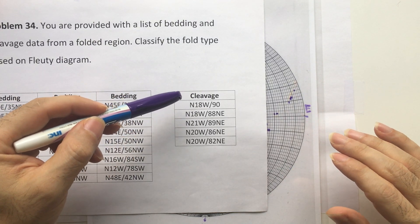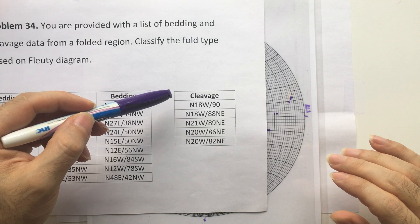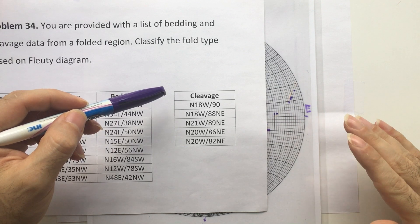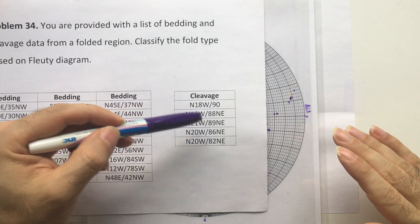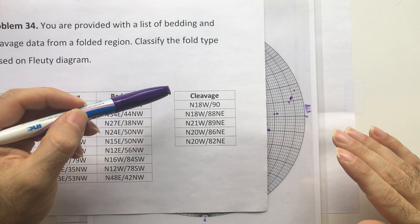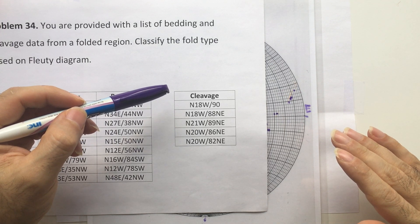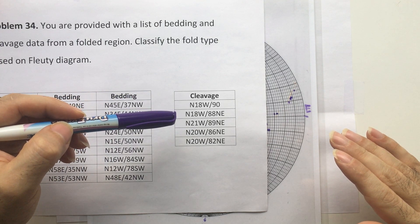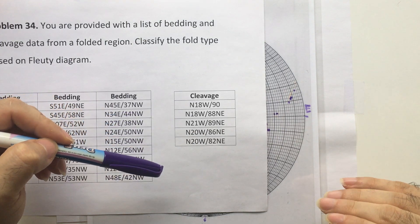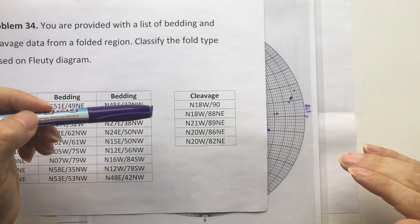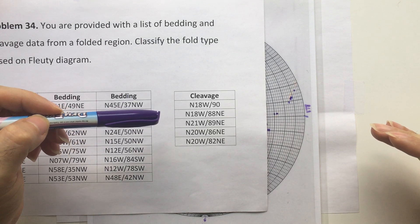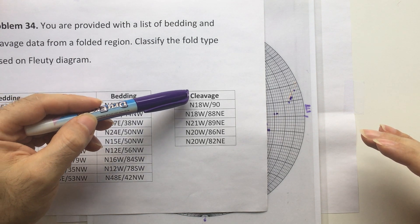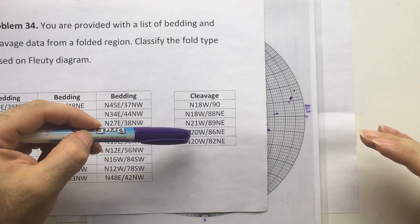There are two important things about cleavage to mention here. First, cleavage is a planar feature — it's a plane with a strike and a dip. Cleavage is parallel with the axial plane, so in space there are several planes parallel with each other that can be cleavage and the fold axial plane.